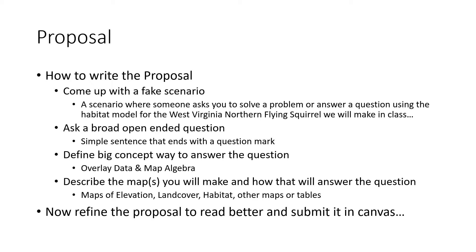I'm going to give you a couple of open-ended fake scenarios, and you can use one of these if you like, or you can come up with your own. Say the International Union of Evil Timber Barons has decided that they want to eliminate the Northern West Virginia Flying Squirrel from existence, because the chairman of the board of this evil group was injured by a flying squirrel as a child and is profoundly afraid of them. He wants to focus their group's efforts to clear-cut all the forests in the areas where these squirrels exist. On the down low, he has approached your environmental sciences firm to identify all the counties with significant populations or significant areas of flying squirrel habitat.